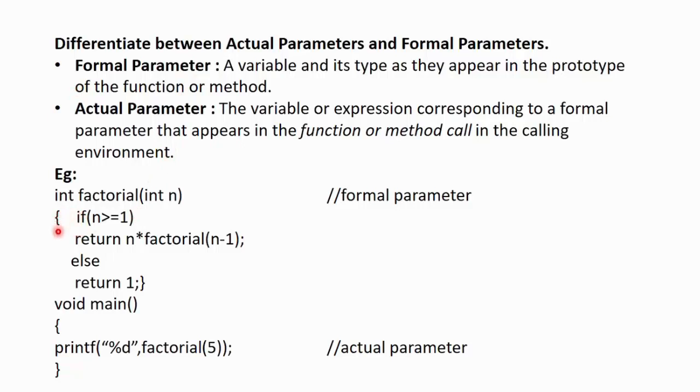Inside its body, we have calculated the factorial, which is if n is greater than equals 1, return n into factorial n minus 1, which is nothing but the recursive calling, else return 1. Inside the main, we have a print statement in which we are printing the value that has been returned by this factorial function and we are passing a value to it.